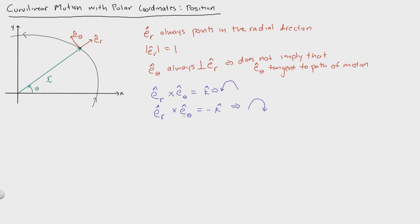In a simple sense, e theta points along the path of motion — it goes along with the motion of the particle. Now I want to define this position vector r tilde in terms of er and e theta. Actually, all we have is er, because the radial direction points in the direction of er, and the r vector doesn't have any component in the e theta direction.